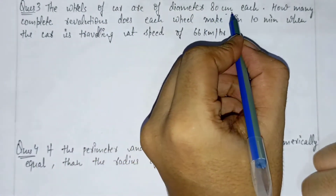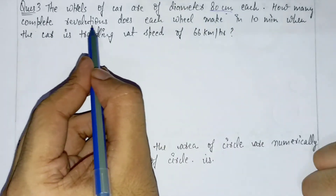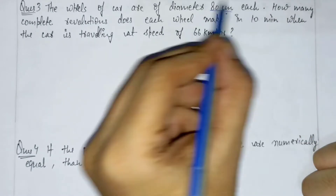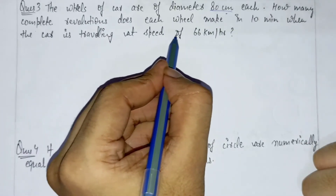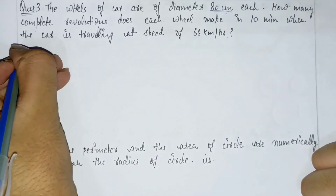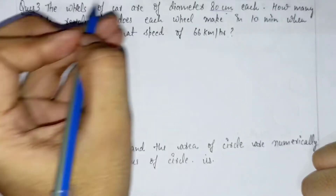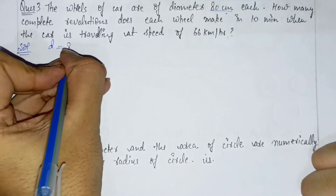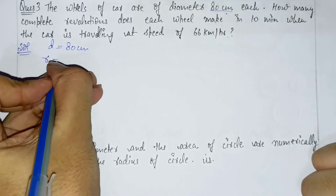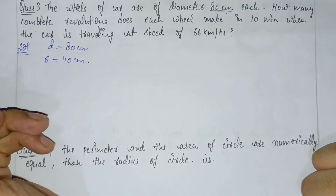Question number 3: a car has wheels of diameter 80 cm. How many complete revolutions does each wheel make in 10 minutes when the car is travelling at a speed of 66 km per hour? The wheel's diameter is 80 cm, so the radius is 40 cm.